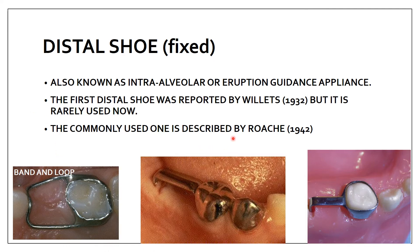It is also known as an intra-alveolar or eruption guidance appliance. 'Intra-alveolar' means within the alveolus. Unlike the band and loop, where the loop sits above the gingiva, the distal shoe's extension goes within the alveolus. It is called an eruption guidance appliance because it guides the permanent first molar for its eruption.